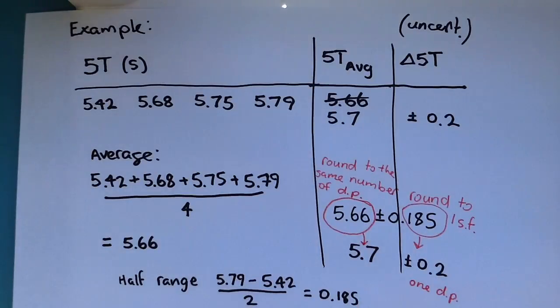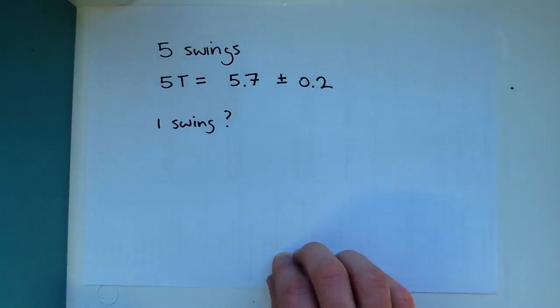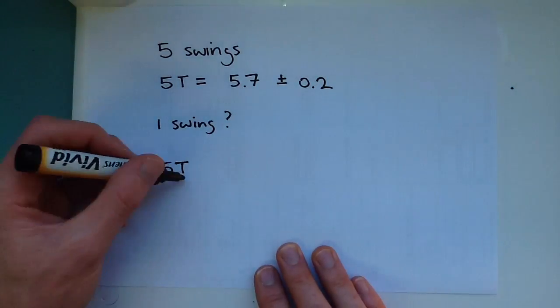This uncertainty is always rounded to one significant figure and the average time will be rounded to the same number of decimal places as its uncertainty. So the average time for 5 periods is 5.7 seconds with an uncertainty of plus or minus 0.2 seconds.